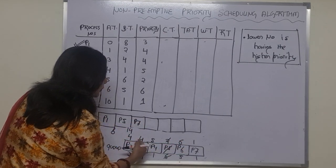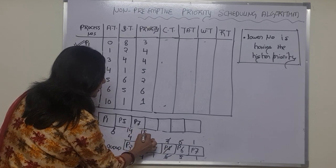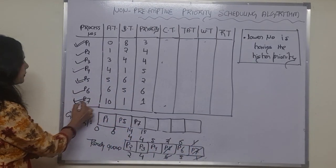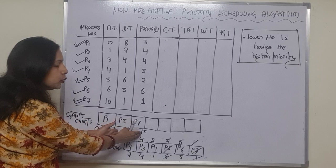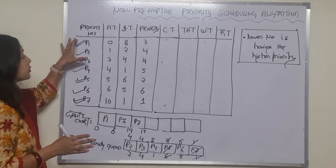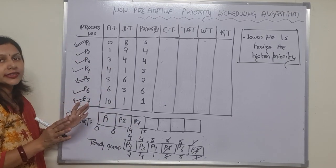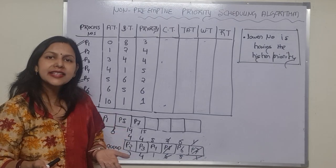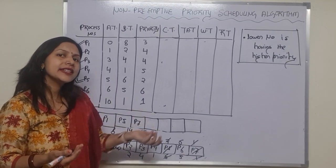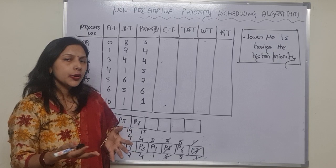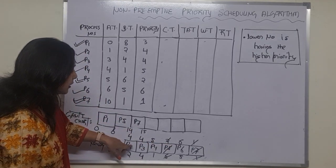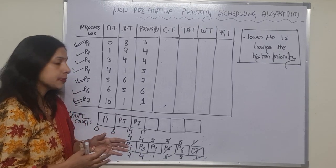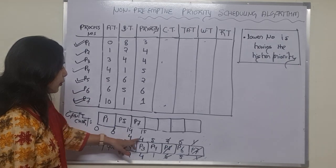The burst time of P7 is 1, so it runs from 14 to 15 and has been completely executed. Now, is there any new process waiting? No. So out of the remaining processes — P2, P3, P4, and P6 — we check which has the highest priority. Their priorities are 4, 4, 5, and 6 respectively.